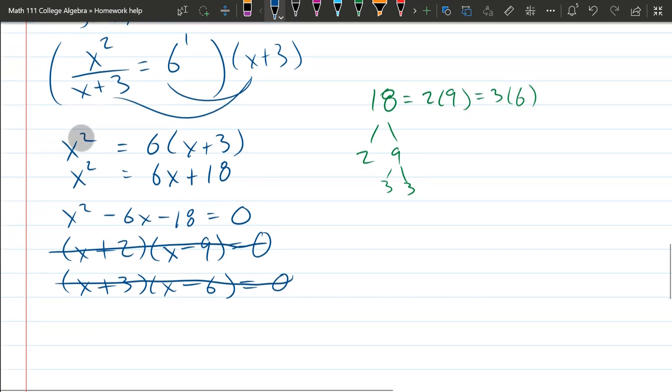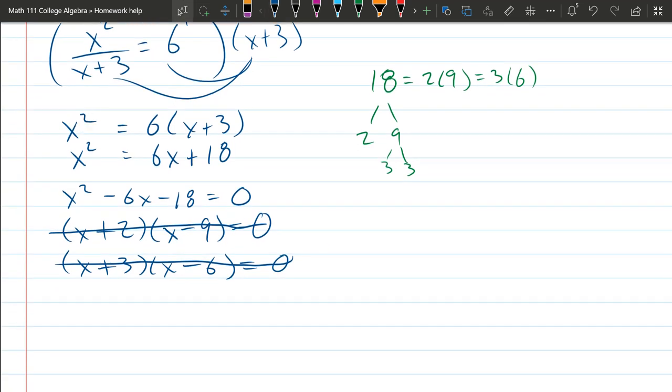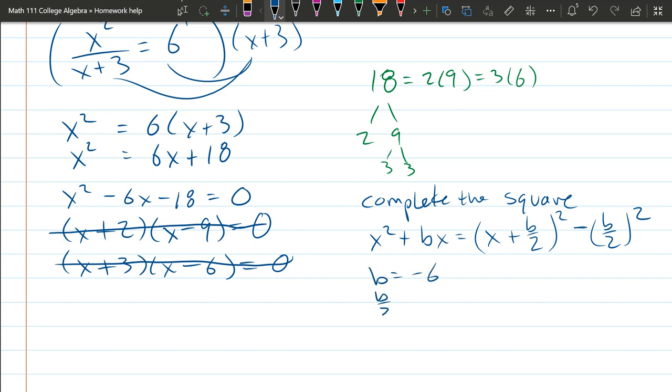That's unfortunate. So we could complete the square. We can also go quadratic formula. Because my middle term is even, I'm going to complete the square. And how we do that: x squared plus bx equals x plus b over 2 squared minus b over 2 squared. So this is how we're going to complete our square.